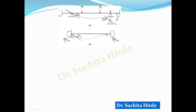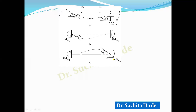Next we will see the effect of theta B. We are considering clockwise rotation as positive. For theta B, the moment developed at the near end is 4EI/L × theta B, because for unit rotation we require a moment of 4EI/L. Then 50% of it is transferred to the other end to maintain slope zero there. So the moment at the far end is 2EI/L × theta B. This is the effect of rotation of joint B.